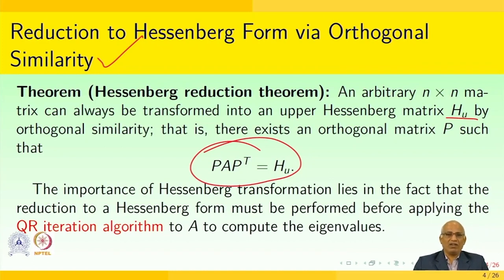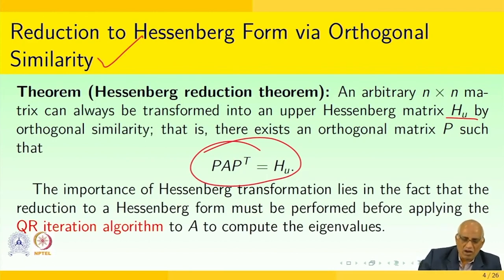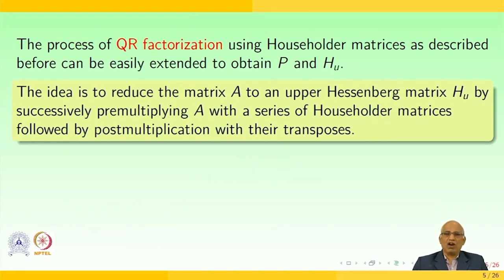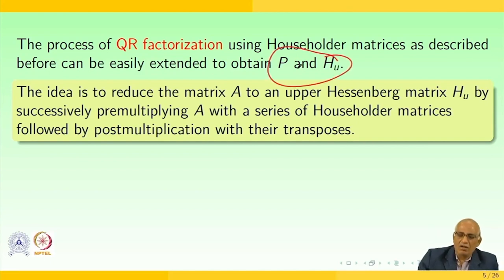The importance of the Hessenberg transformation lies in the fact that the reduction to Hessenberg form must be performed before applying the QR iteration algorithm to compute the eigenvalues. The process of QR factorization using Householder matrices, as described before, can be easily extended to obtain P and H_U.